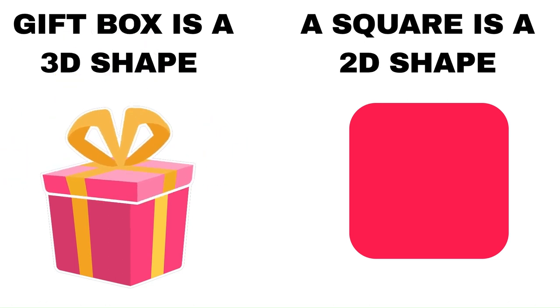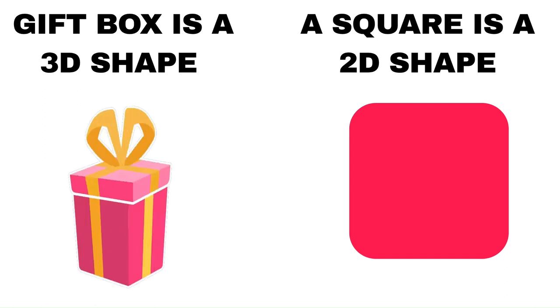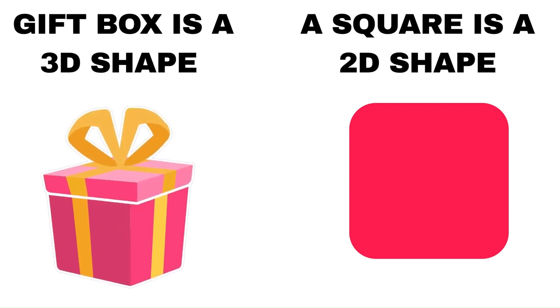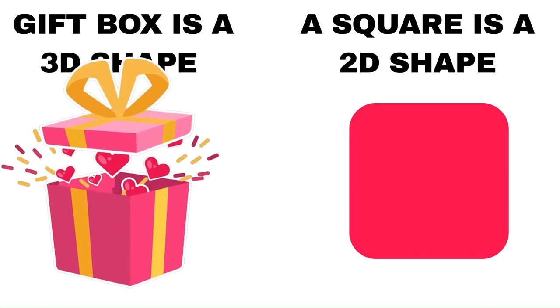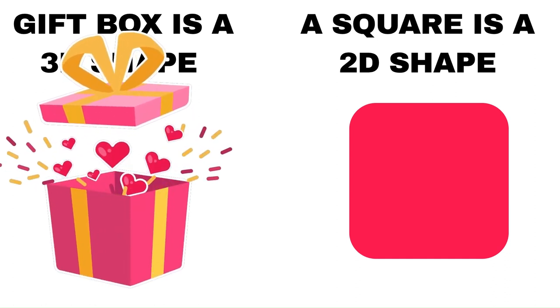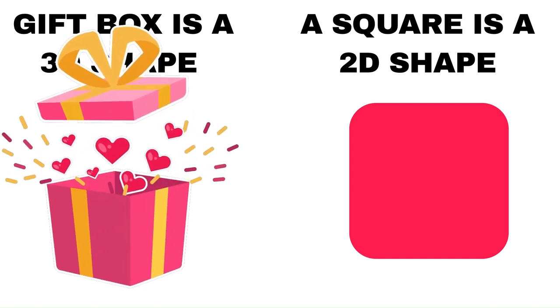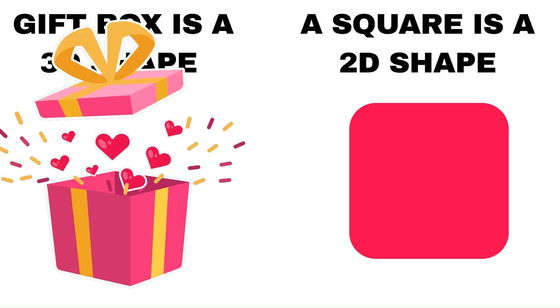Similarly, a gift box is a solid 3D shape, while a square is a 2D shape and is flat.